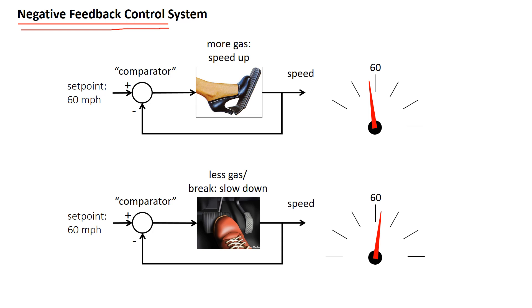Imagine you want your car to go at the constant speed of 60 miles an hour — we could call 60 the set point. If your speed is actually a little bit less than 60, you need to give a little bit more gas to speed up. If your speed is 58 — a little bit less than the set point — we look at the difference between the set point and the current speed: that's plus 2. The positive signal comes from that positive 2, so the signal is to apply more gas.